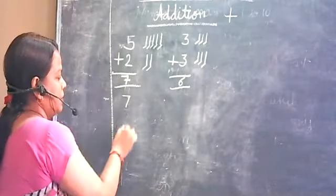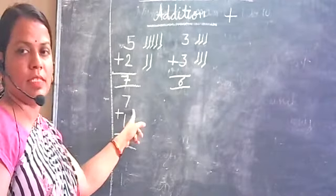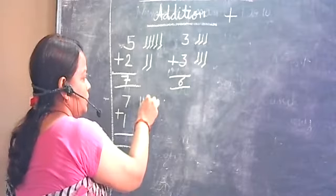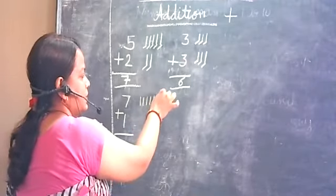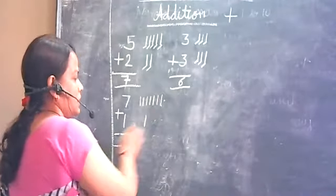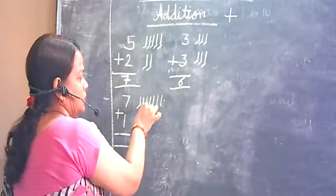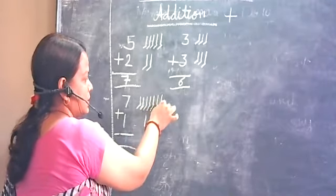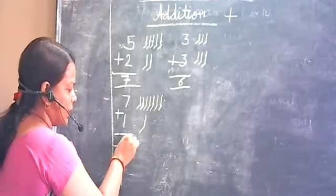7 and 1. First of all, how many lines will we do? 7. 1, 2, 3, 4, 5, 6 and 7. Now, 1 line. 1. In sab ko? Plus kijiye. 1, 2, 3, 4, 5, 6, 7 and 8. So, 7 plus 1 equal to 8.